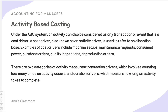Under the ABC system, an activity can be considered any transaction or event that is a cost driver. A cost driver is an activity driver used to refer to an allocation base — for example, machine setup, maintenance requests, consumed power, or purchase orders. There are two categories of activity measures: the transaction driver, which counts how many times an activity occurs, and the duration driver, which measures how long an activity takes to complete.